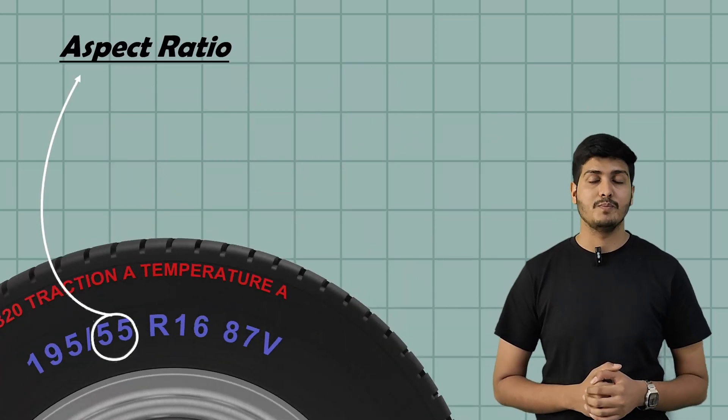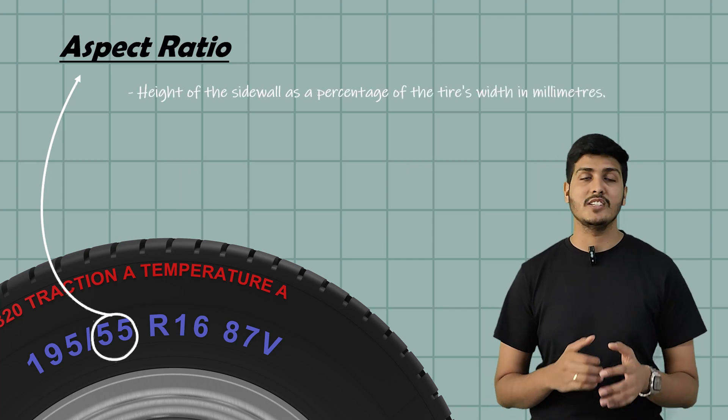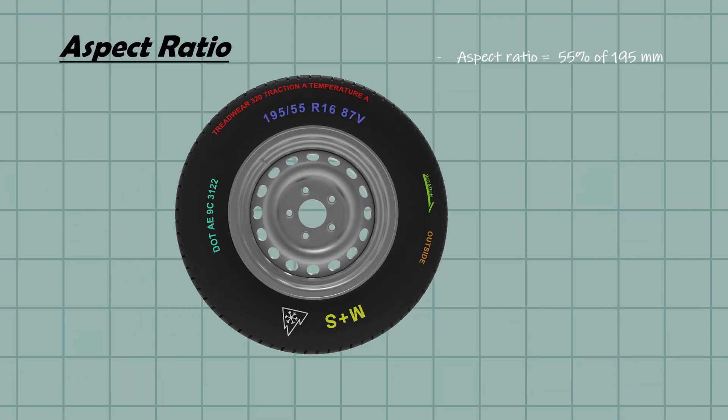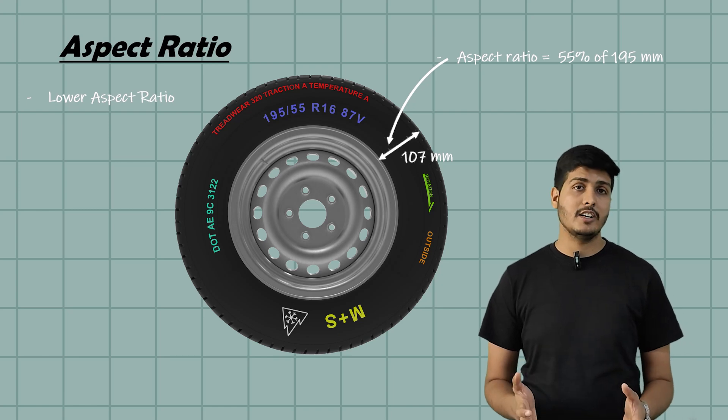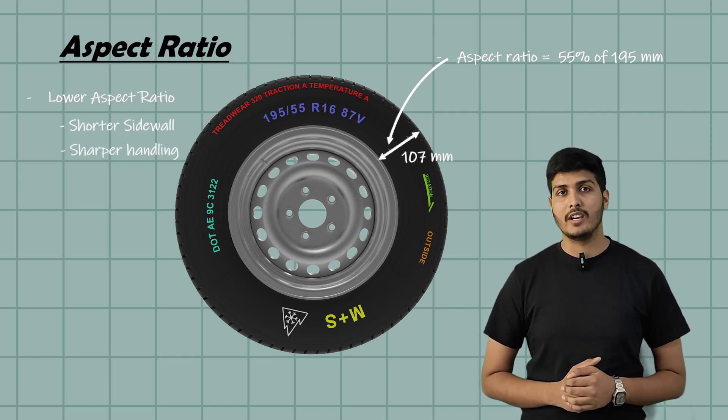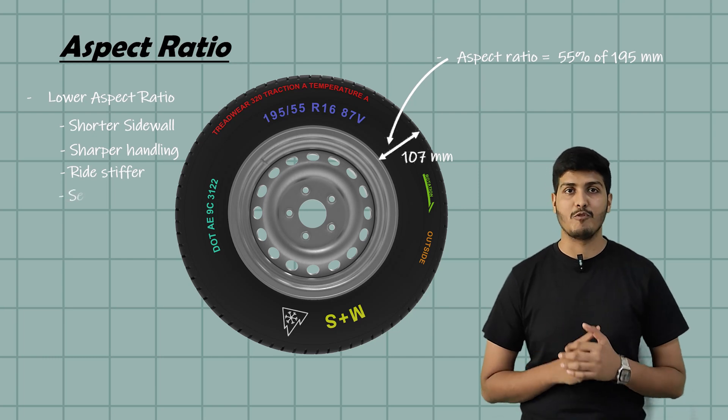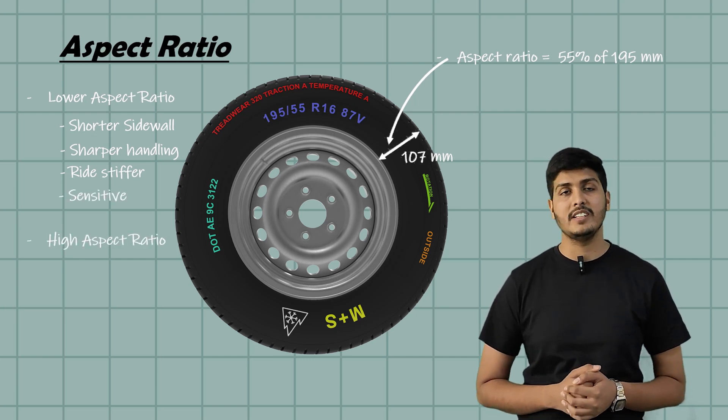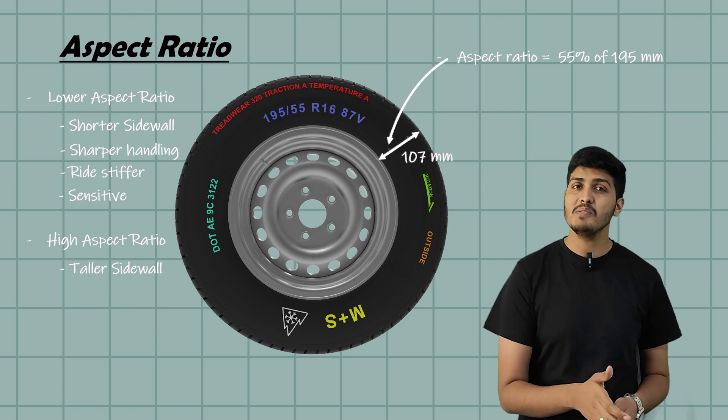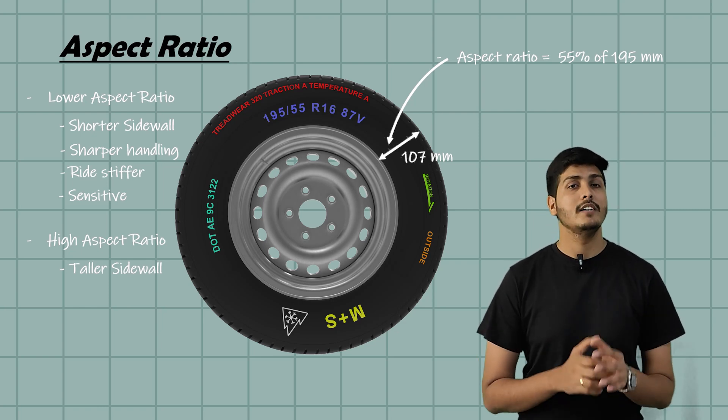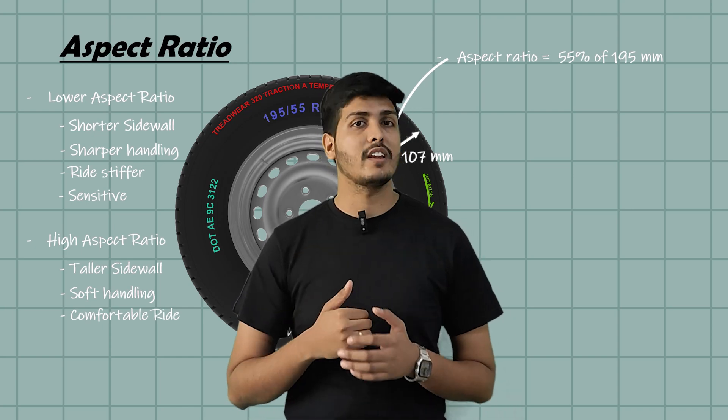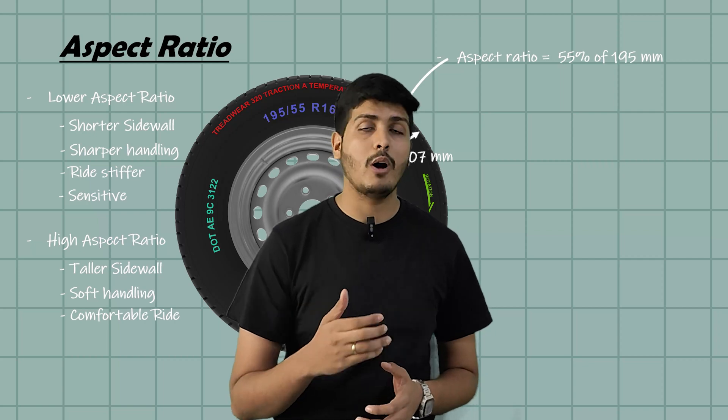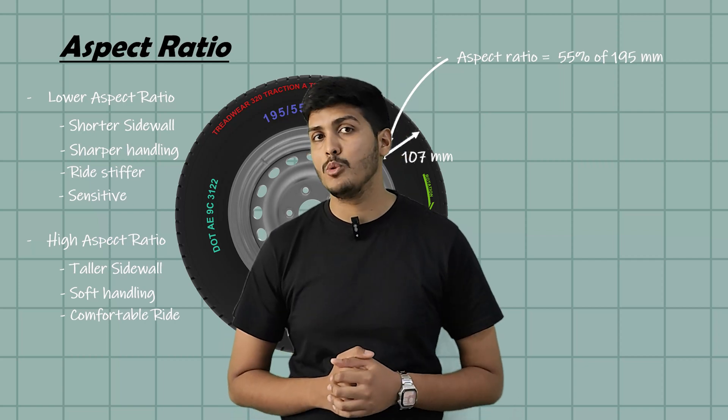Next is 55, the aspect ratio. This tells us the height of sidewall as the percentage of section width. So here 55% of 195 means the sidewall height is approximately 107 mm. Now why does this matter? A lower aspect ratio like 40 or 45 means a shorter sidewall. This gives you sharper handling and sportier feel but it also makes your ride stiffer and sensitive to potholes. A higher aspect ratio like 65 or 70 means a taller sidewall which absorbs bumps better giving you a more comfortable ride but with softer handling. So aspect ratio directly affects both your comfort and control. If you want a smoother ride, go with a higher aspect ratio. If you care more about cornering and responsiveness, a lower aspect ratio makes sense.